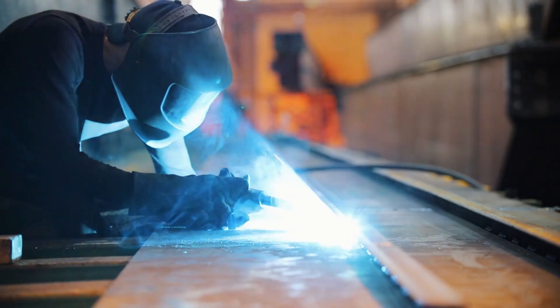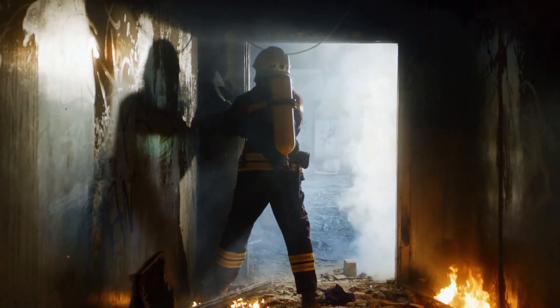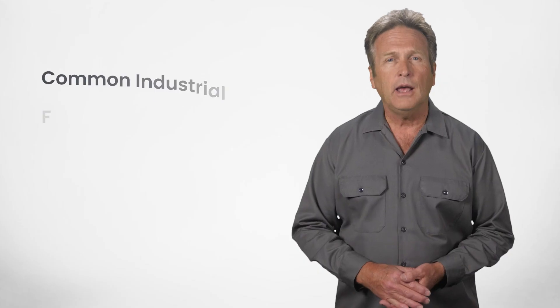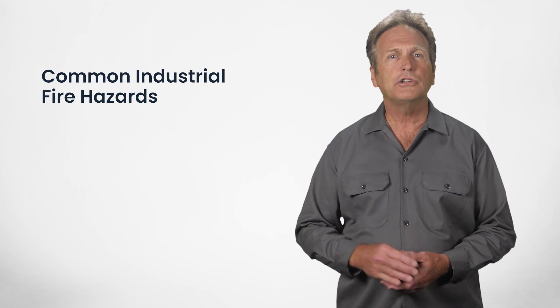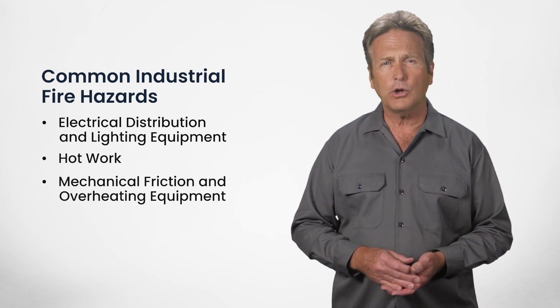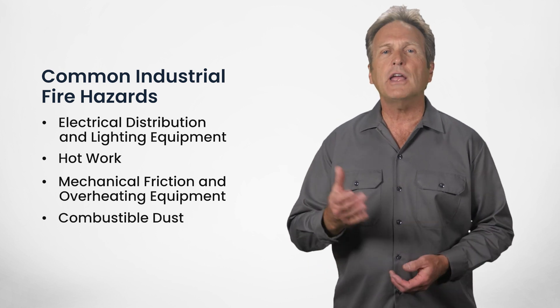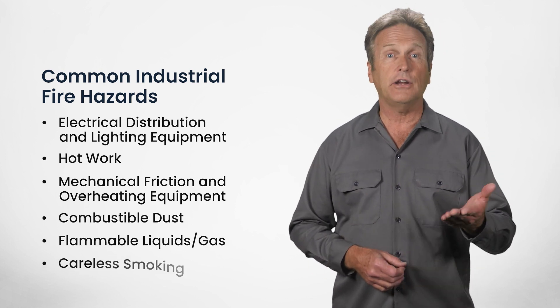Now that we understand some fire basics, let's look at a few fire hazards you might come across in an industrial setting. By learning how to quickly identify and address these hazards, we can prevent a fire before it occurs. Some common industrial fire hazards include electrical distribution and lighting equipment, hot work such as welding, cutting and grinding, mechanical friction and overheating equipment, combustible dust, flammable liquids and gas, and careless smoking.